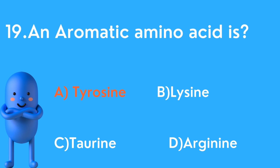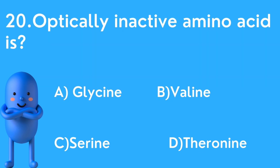Twentieth question: Optically inactive amino acid is — options are A) Glycine, B) Valine, C) Serine, D) Threonine. The correct answer is glycine, because glycine does not have a chiral carbon, so it has no optical activity.